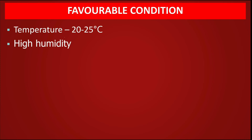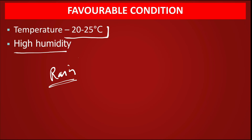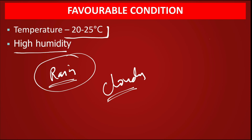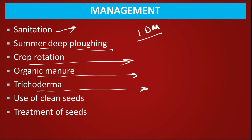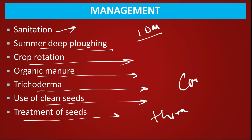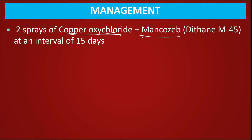Favorable conditions: temperature 20–25°C, high relative humidity, intermittent rain, and cloudy weather — especially rain during ear formation/emergence significantly increases disease. Management: field sanitation, summer deep plowing, crop rotation with non-host, organic manure application, use of Trichoderma, use of clean/certified seeds, seed treatment with Thiram or Carbendazim, two sprays of copper oxychloride or Mancozeb at 15-day intervals.